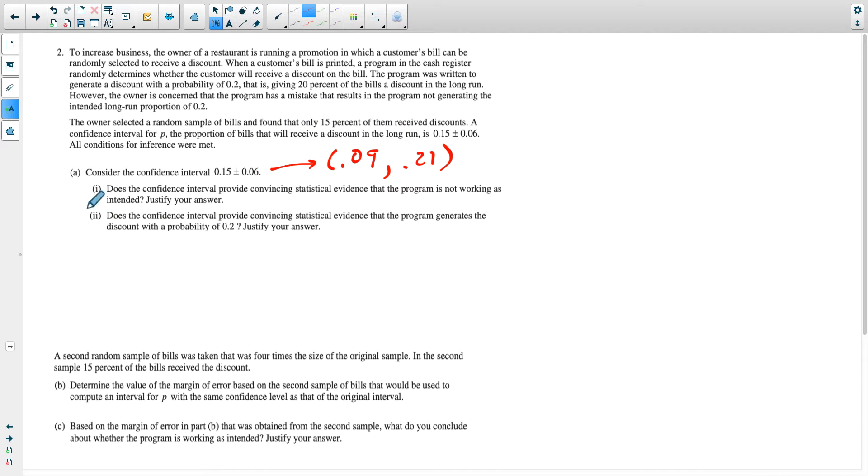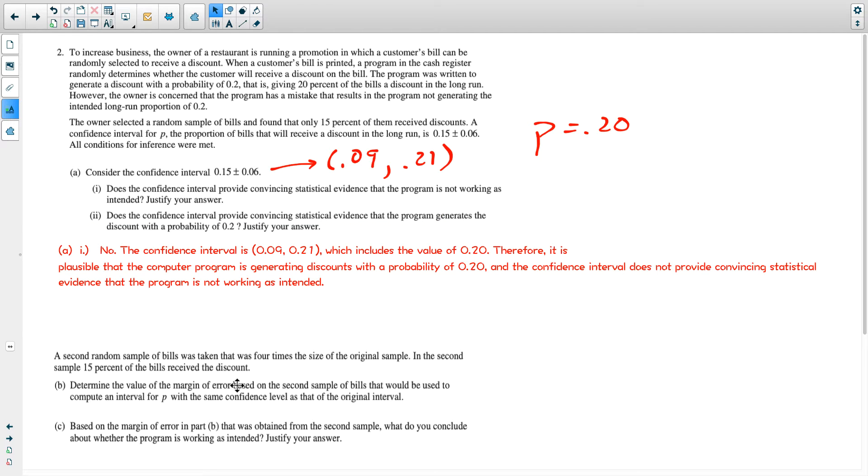First question: does the confidence interval provide statistical evidence that the program is not working? Well, the program is supposed to work at 20%. It gives discounts 20% of the time. This interval contains the 20%, so this interval does not give evidence that it's not 20%. Here's how I'd write it up: The confidence interval is from 9 to 21%, which includes the value of 0.20. Therefore, it is plausible that the computer program is generating discounts with a probability of 20%, and the confidence interval does not provide statistical evidence that the program is not working as intended.